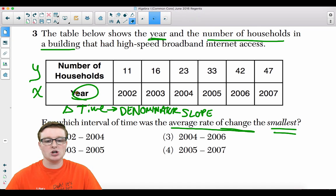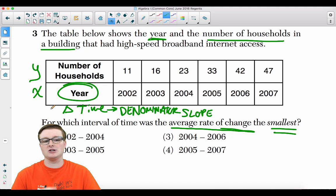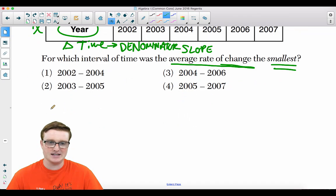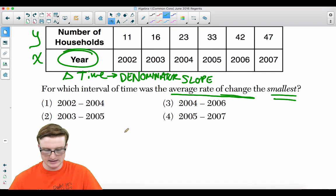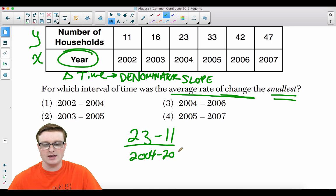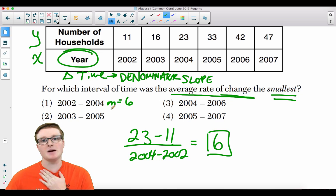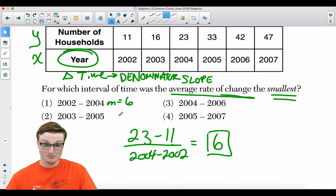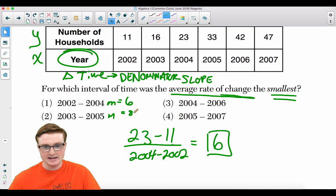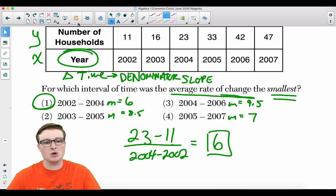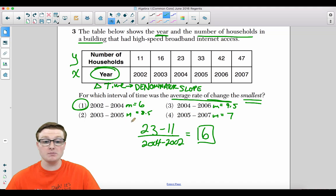Since we're talking about years and the change in years, it's always going to be in the denominator. Let's take a look at choice one. You're doing 23 minus 11 over 2004 minus 2002, that is equal to a slope of six. Now take my word for it, but I calculated all these slopes. The slope of choice two is 8.5, the slope of choice three is 9.5, and the slope of choice four is seven. Your answer is going to be choice one because that is the smallest slope out of all of those intervals.